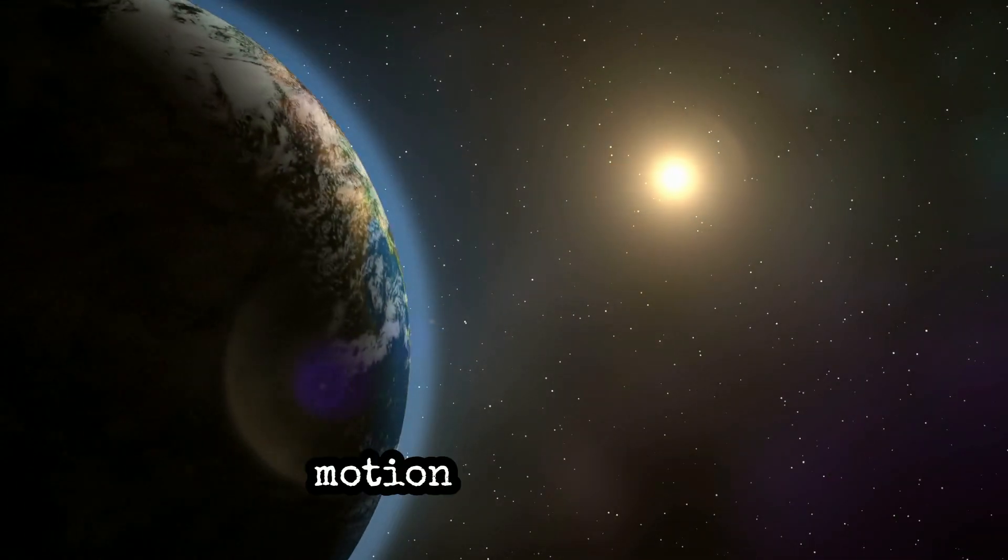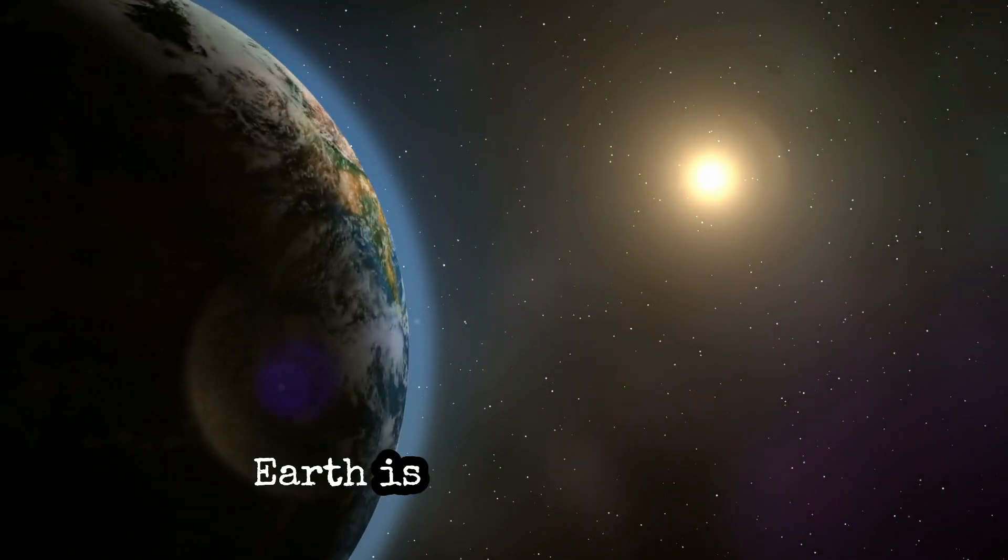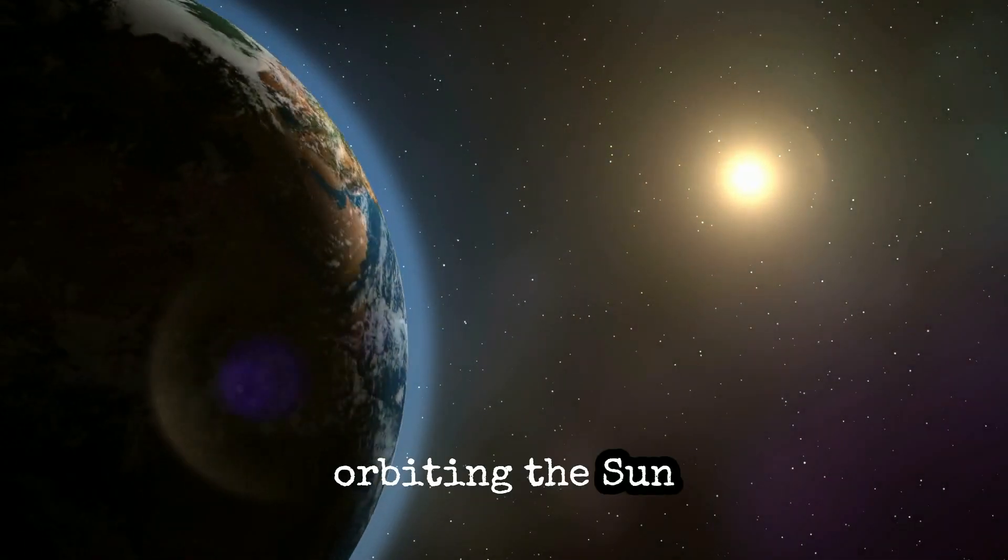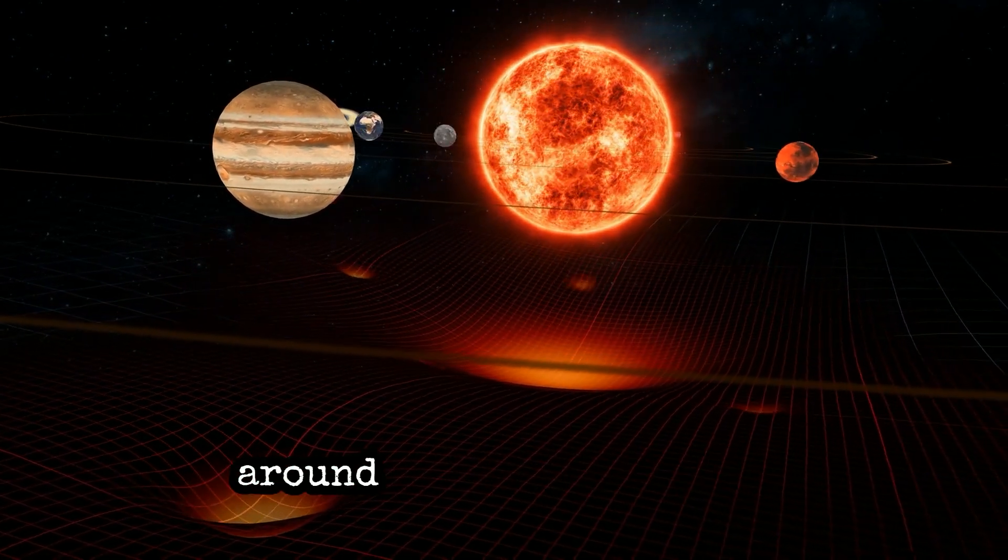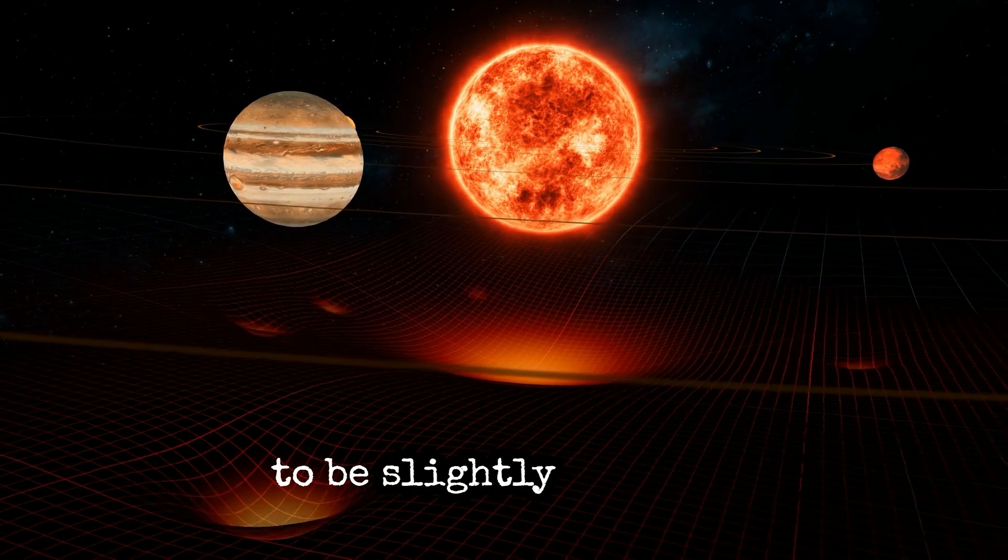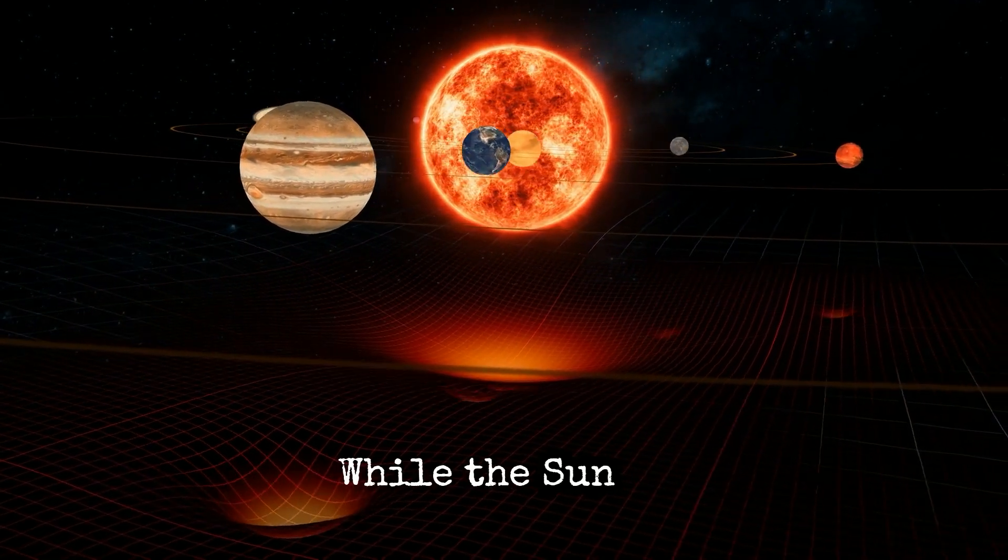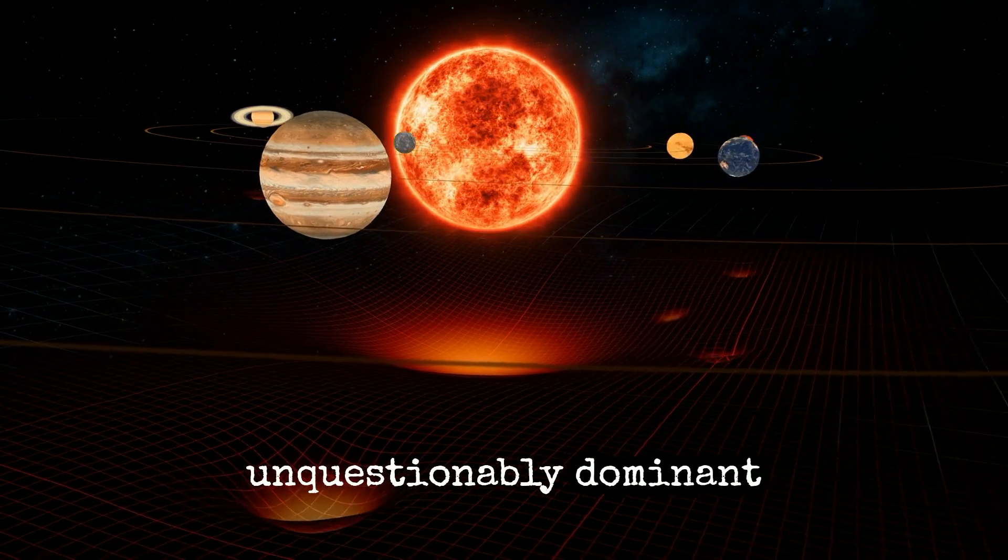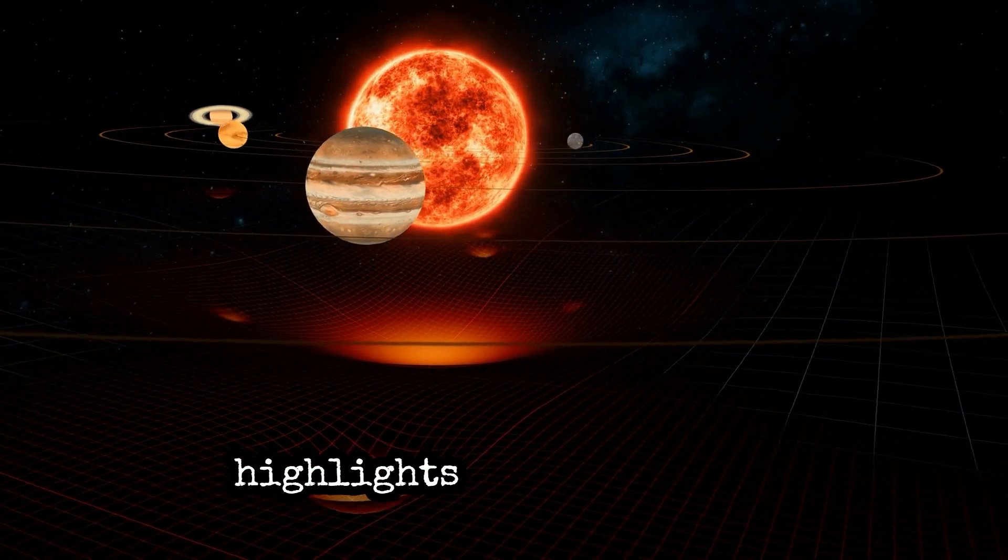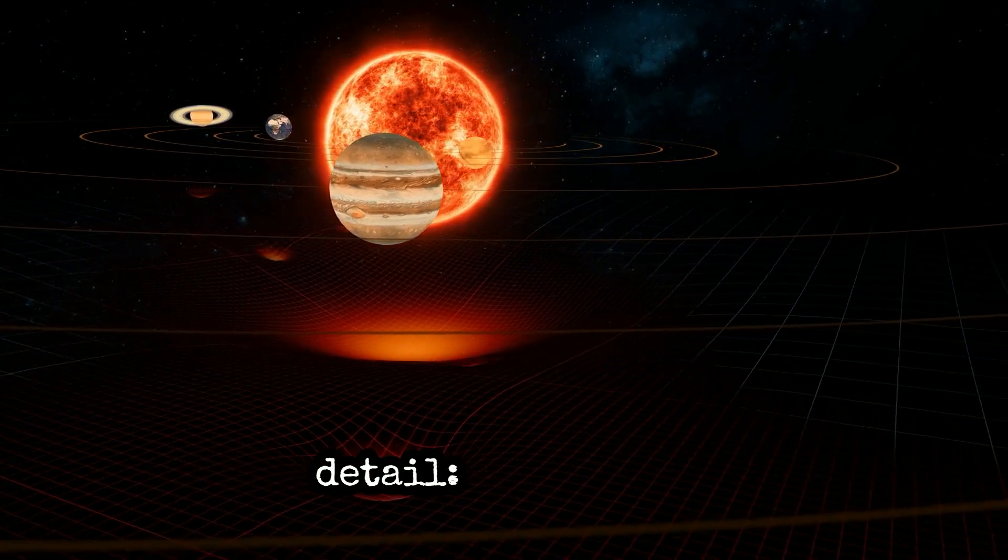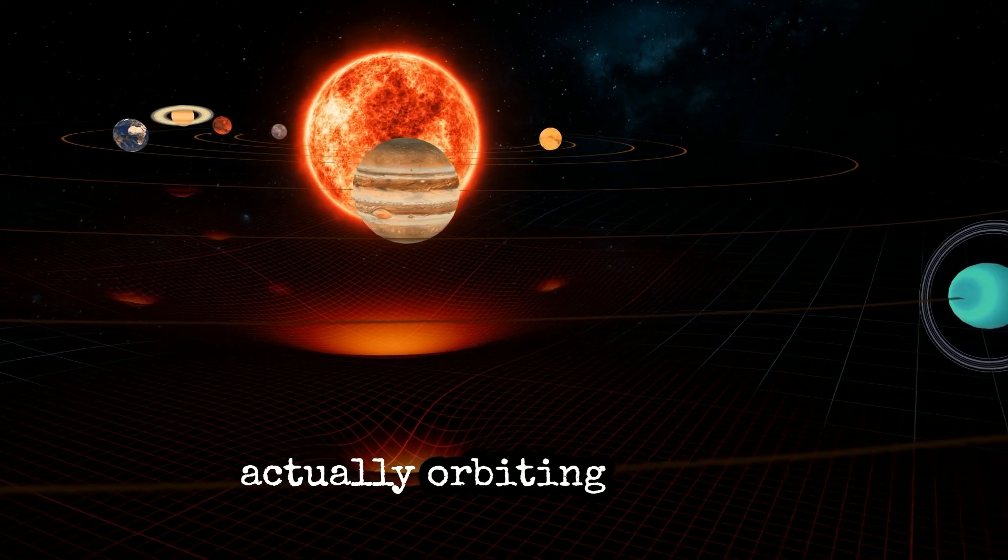New insights into planetary motion reveal that Earth is not technically orbiting the Sun. Our early conceptions of planets orbiting perfectly around the Sun might need to be slightly revised. While the Sun is unquestionably dominant in our solar system, a fresh look at planetary motion highlights an interesting detail. Earth isn't actually orbiting the Sun.